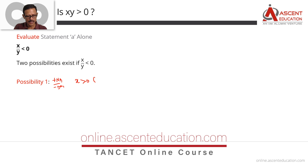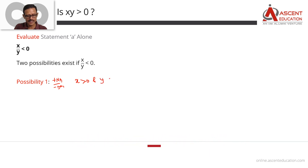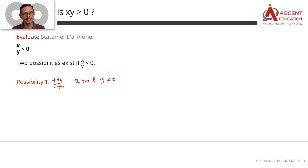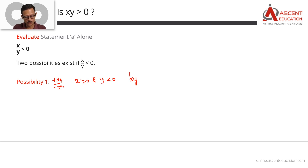In possibility 1: X is greater than 0 and Y is less than 0 — the fraction is definitely negative. What will be the product X into Y? One number is positive and one number is negative. The product of a positive number and a negative number is always negative.